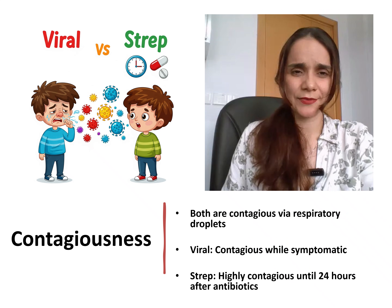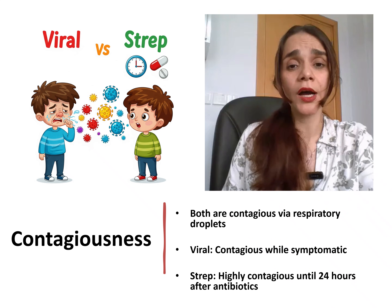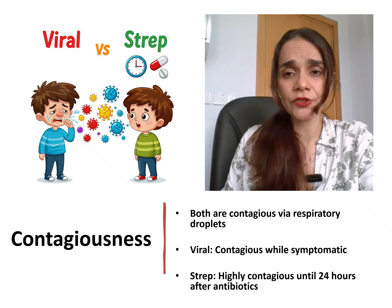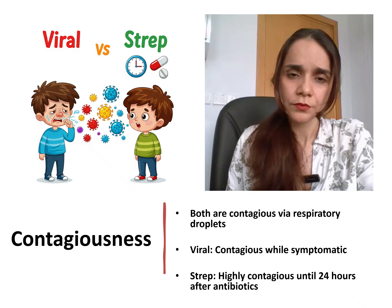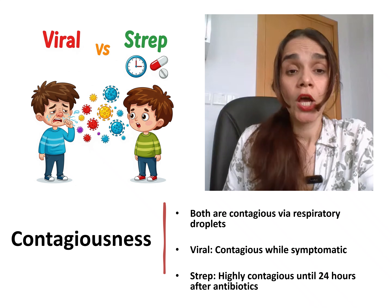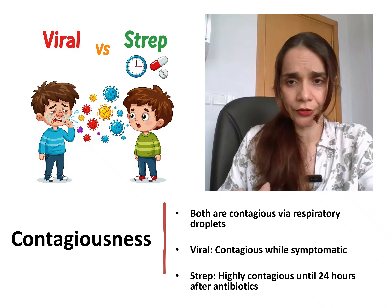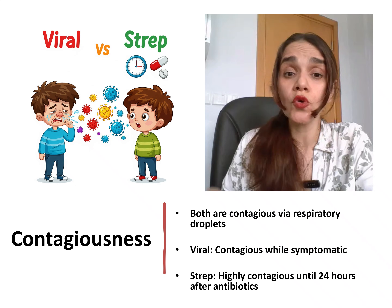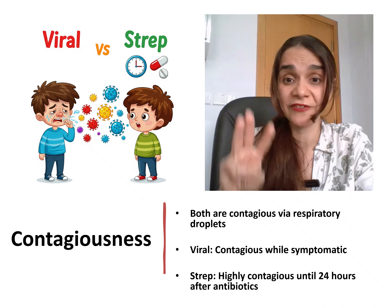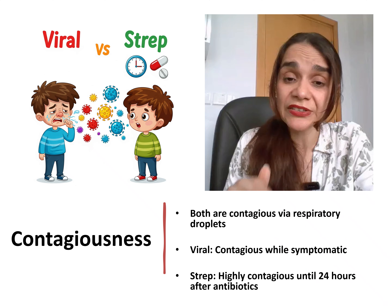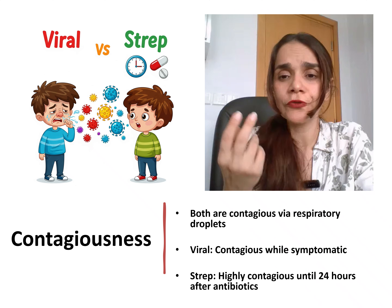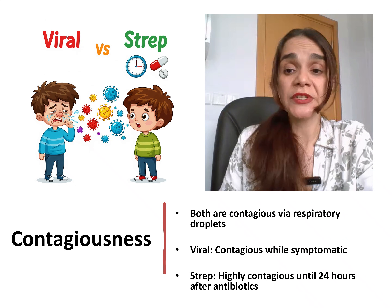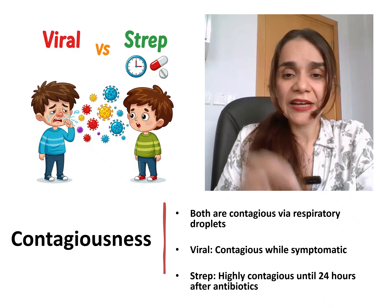Let's talk about contagiousness. Both viral pharyngitis and strep throat are highly contagious, spreading through respiratory droplets from coughing or sneezing, direct contact, or indirect contact via contaminated surfaces. Viral infections are typically contagious during the incubation period — before symptoms appear — and while symptoms are present. Strep throat is most contagious for up to two to three weeks if left untreated. Antibiotics can significantly reduce the contagious period, usually to within 24 to 48 hours. That's why it's important to complete treatment and stay home from school or work for at least a day after starting antibiotics.